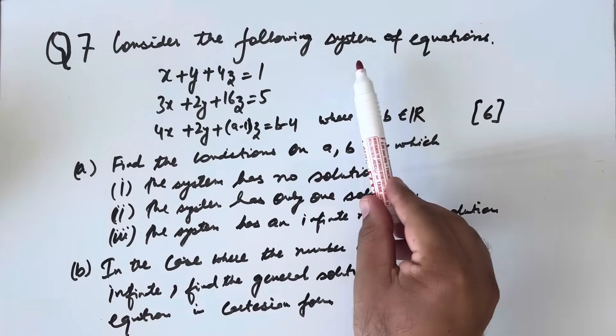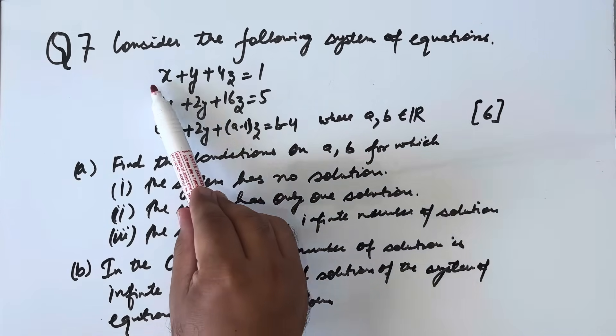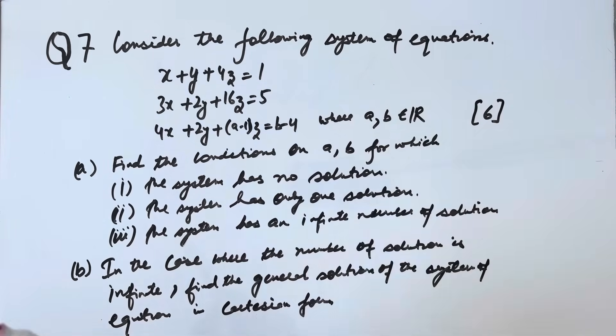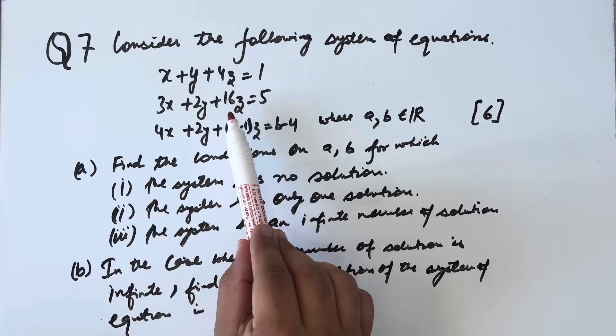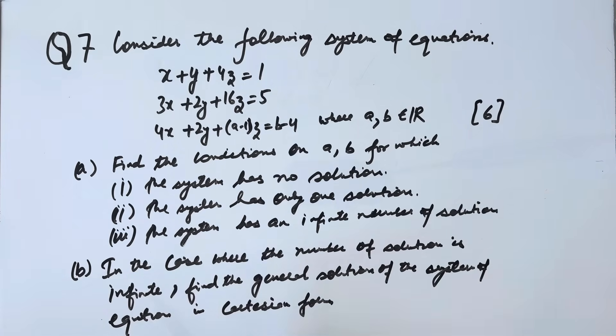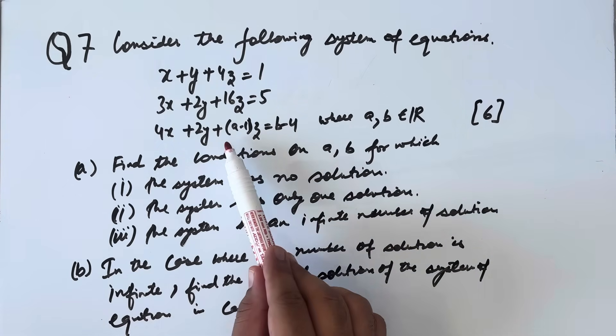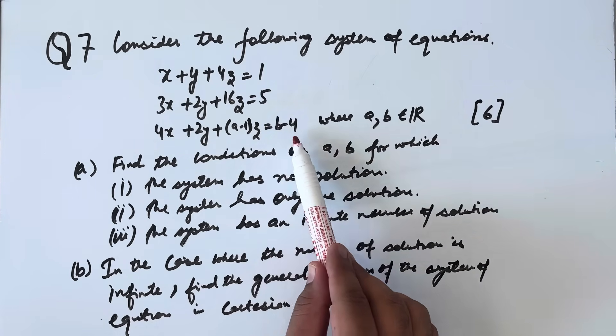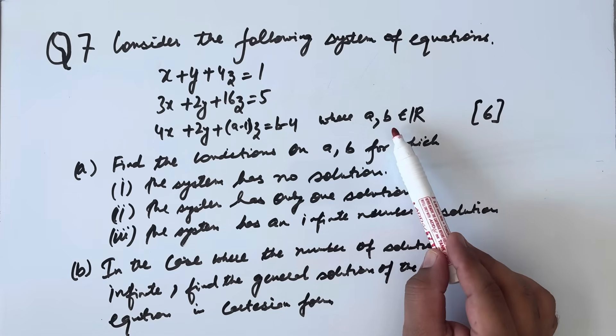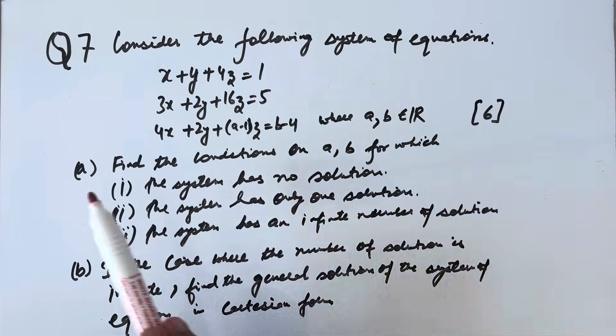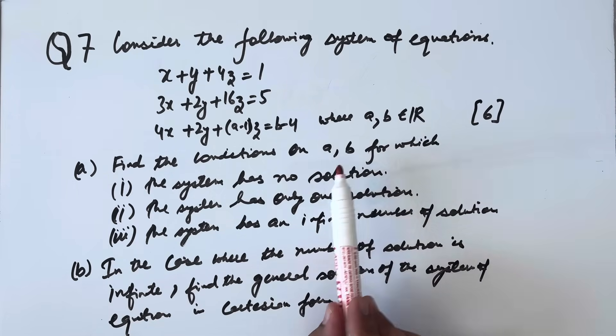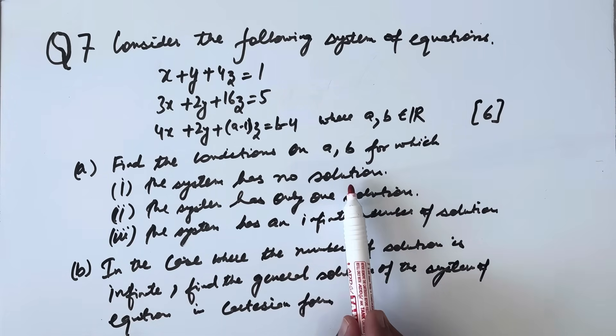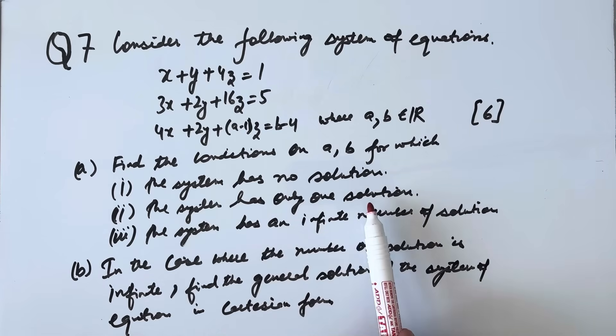Question number 7: Consider the following system of equations: x + y + 4z = 1, 3x + 2y + 16z = 5, 4x + 2y + (a-1)z = b - 4, where a, b belongs to real numbers. Part a, find the condition on a and b for which: the system has no solution, the system has one solution, the system has infinite number of solutions.